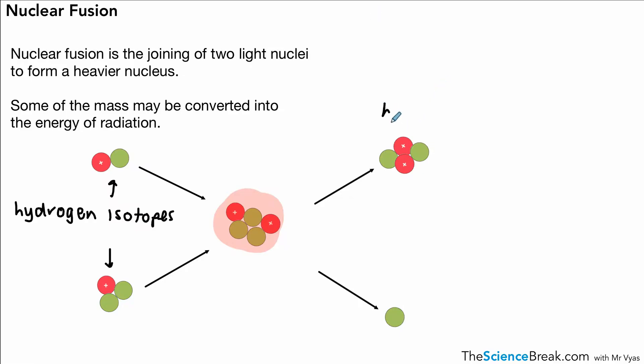This is one example of a fusion reaction. In this case, one of the products is a helium nucleus and a neutron. But also, as we said quite importantly, we have some of the mass, small percentage of the mass, I think it's on average about 0.7%, is converted into the energy of radiation.